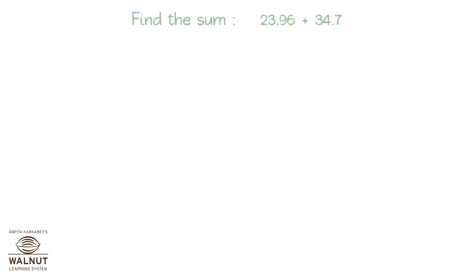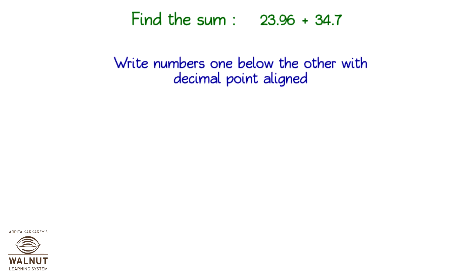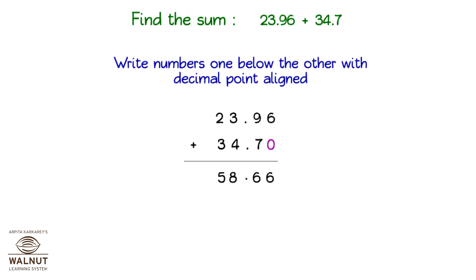Find the sum 23.96 plus 34.7. Write the numbers one below the other with the decimal point aligned. We add a 0 after 7, so it becomes 34.70. The answer is 58.66.